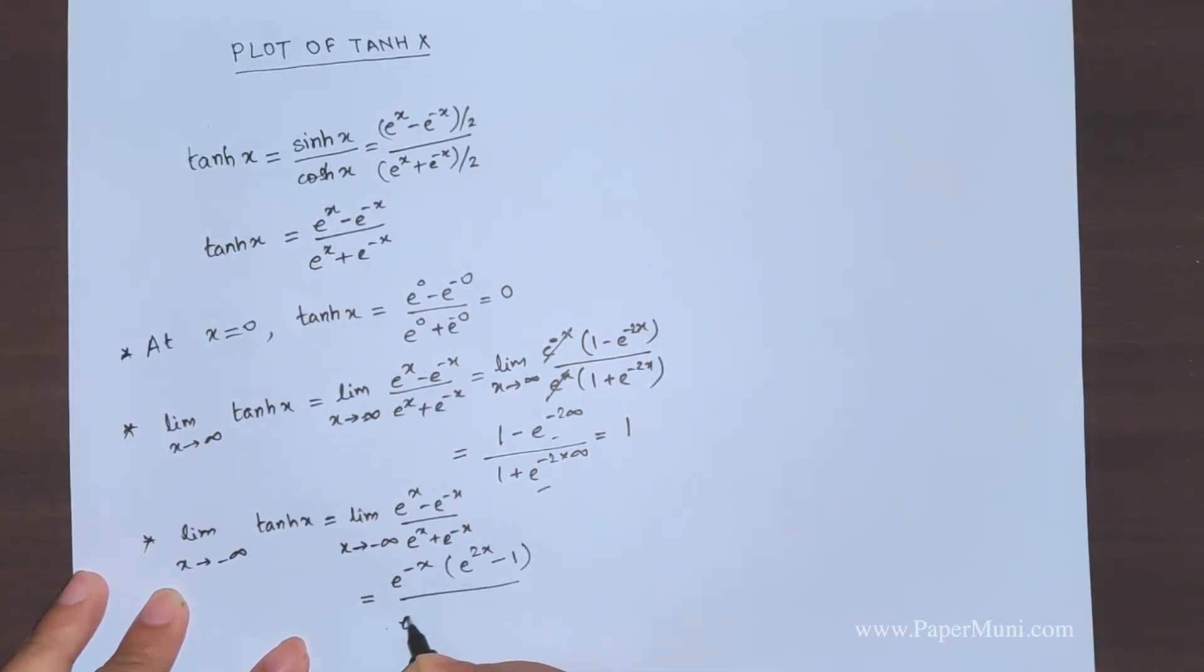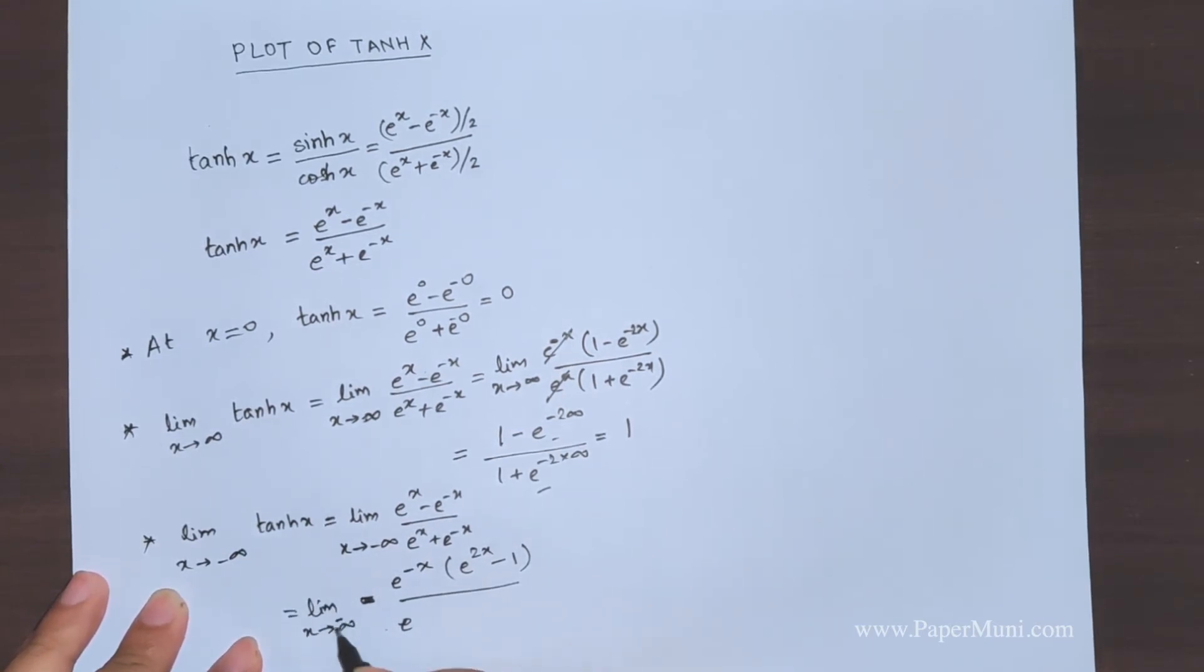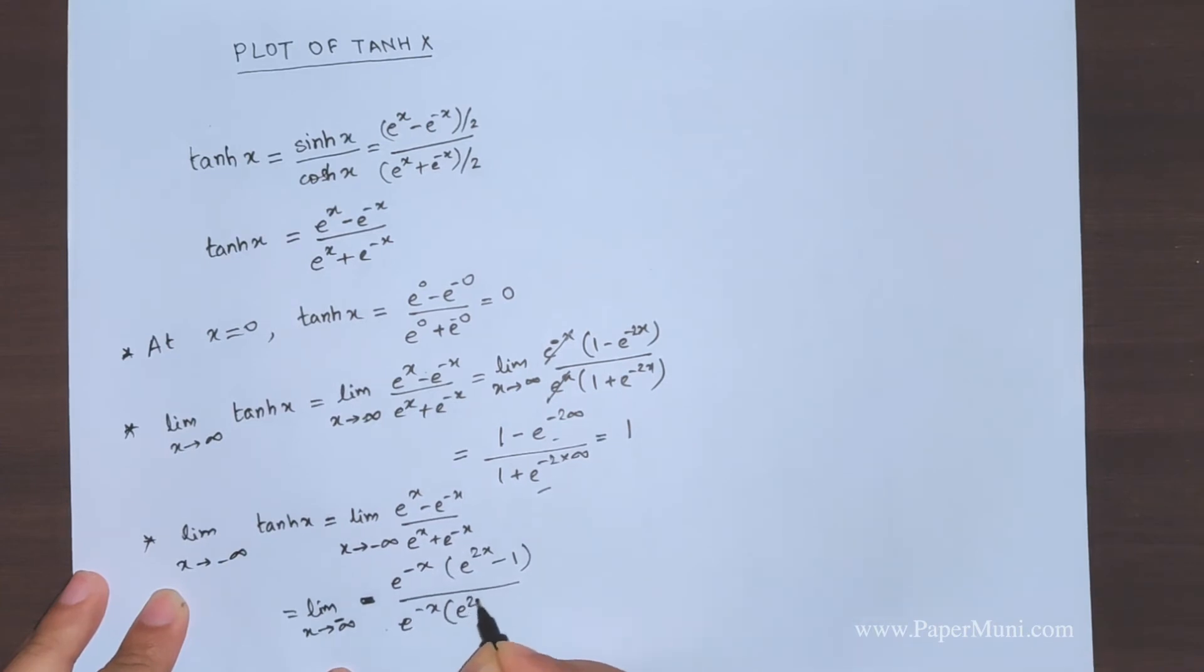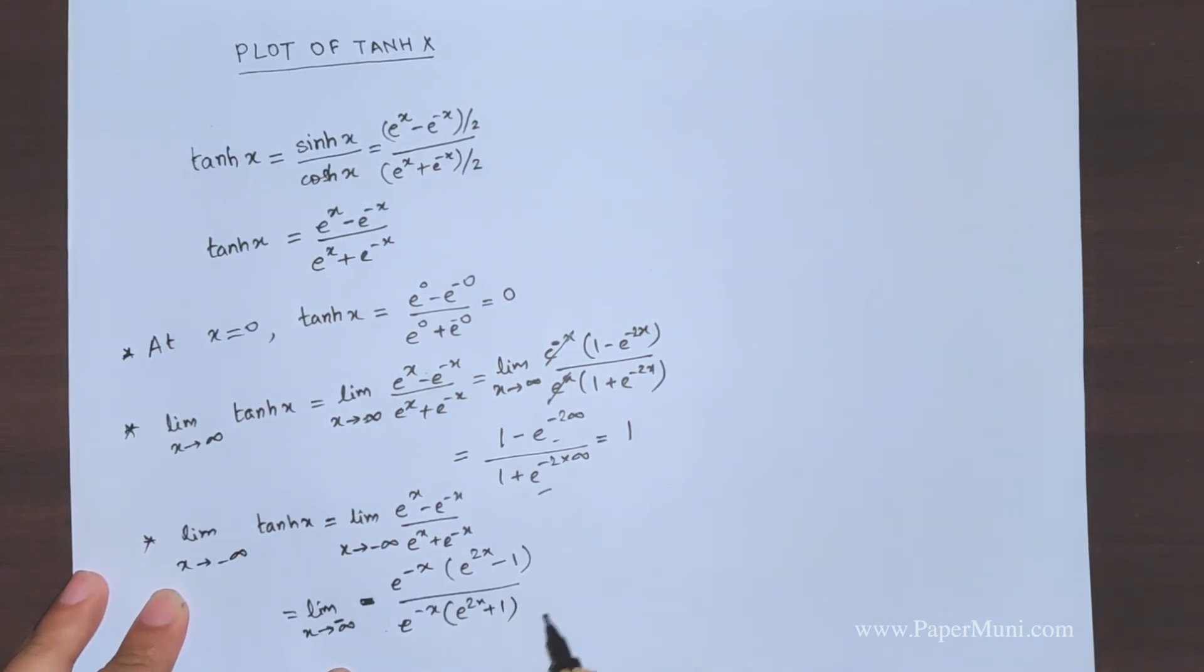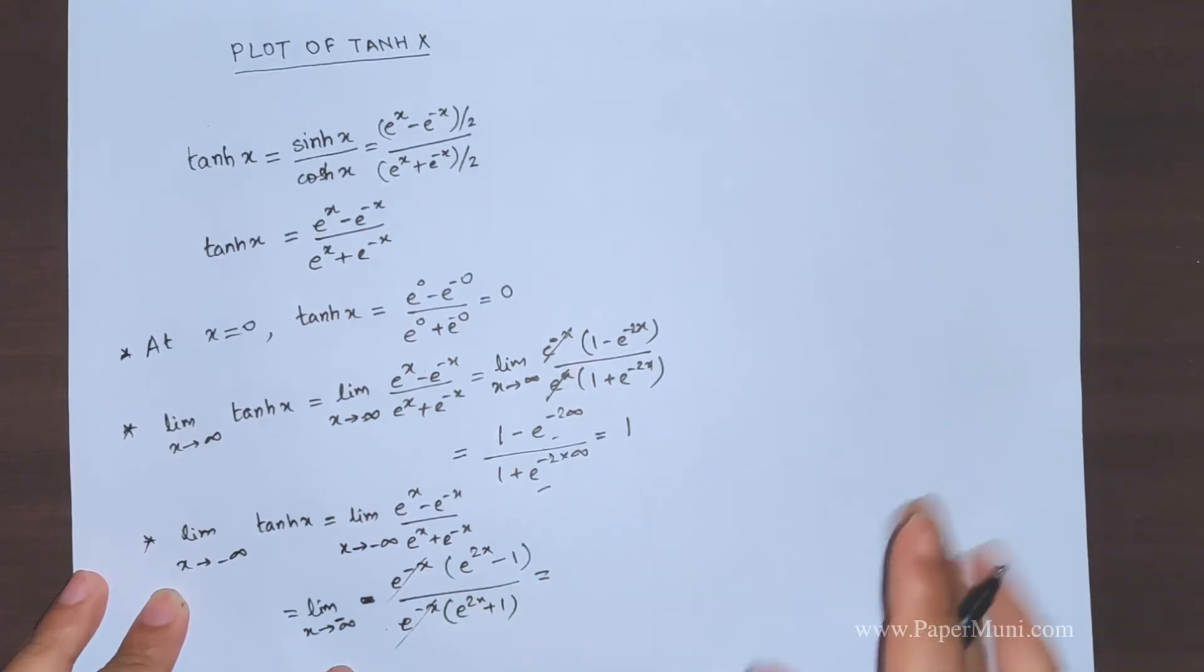In the denominator, this becomes e^(-x)(e^(2x) + 1). These e^(-x) terms cancel. Before taking the limit, we cancel these terms. So we have (e^(2x) - 1)/(e^(2x) + 1).